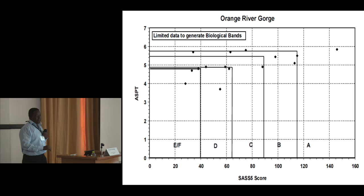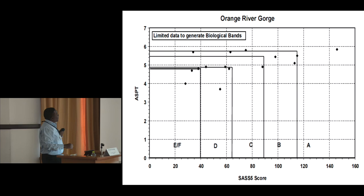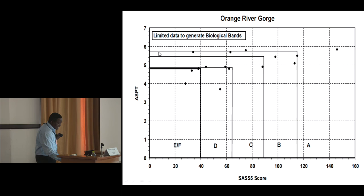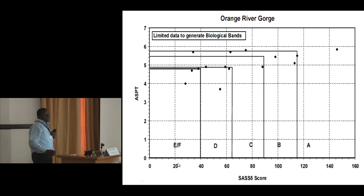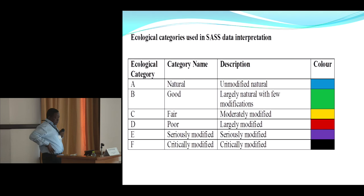The most important slide shows that the first thing you determine is the Average Score Per Taxa — on the y-axis — while the total SAS score is on the x-axis. For instance, if your ASPT is 5 and your SAS score is 100, you project horizontally and vertically to the point where they meet, and that gives you the category for that particular site — anything from A to F.